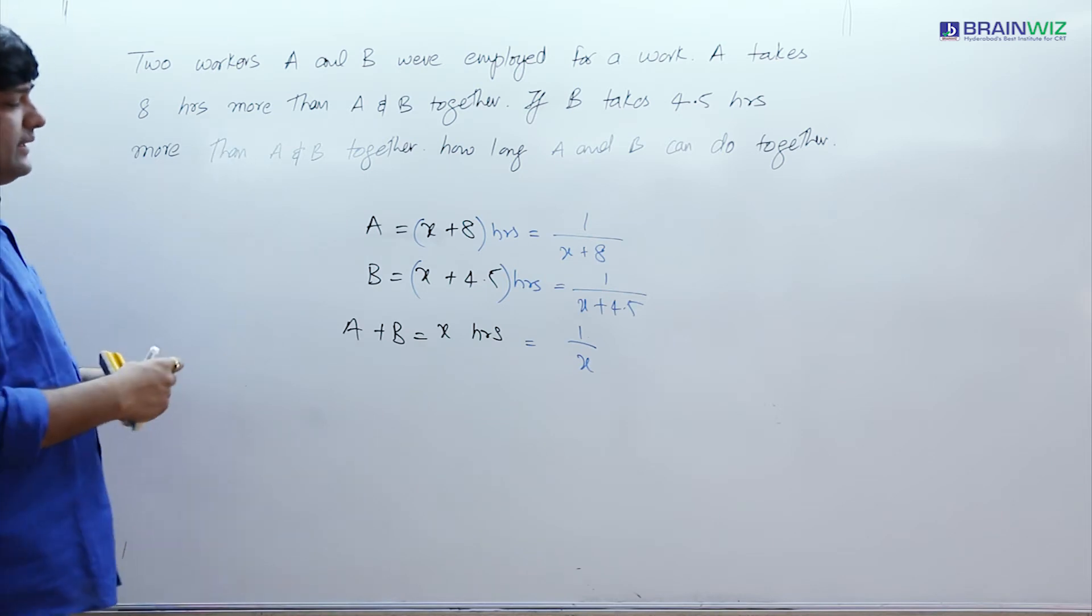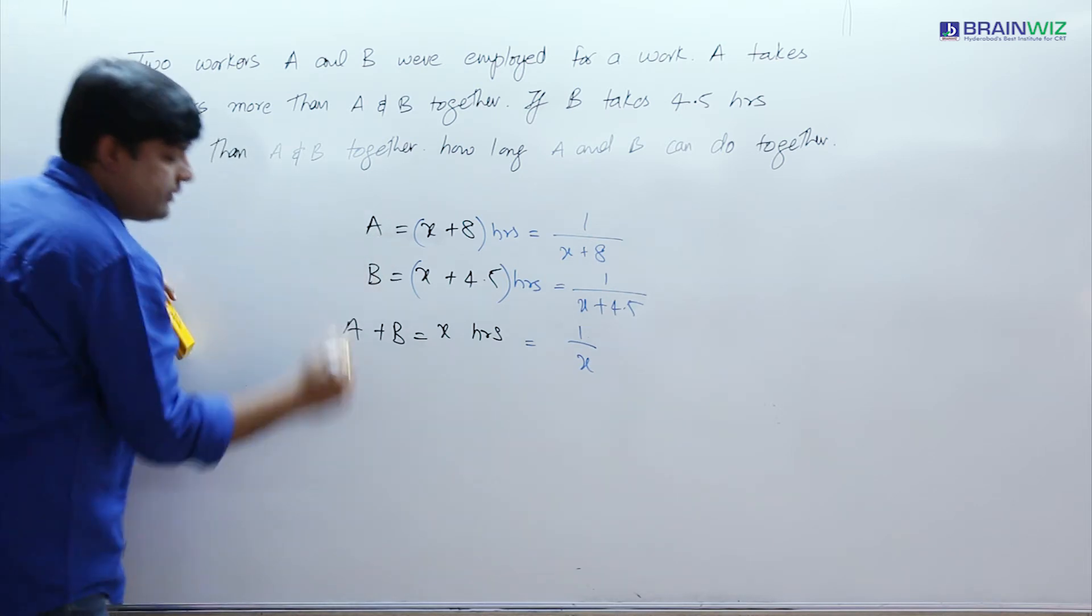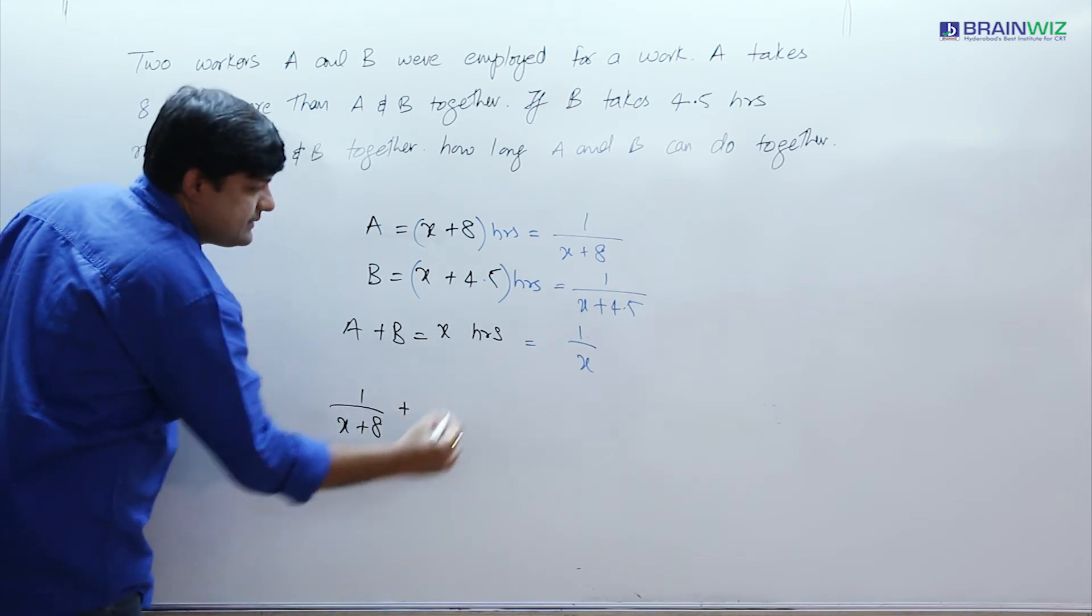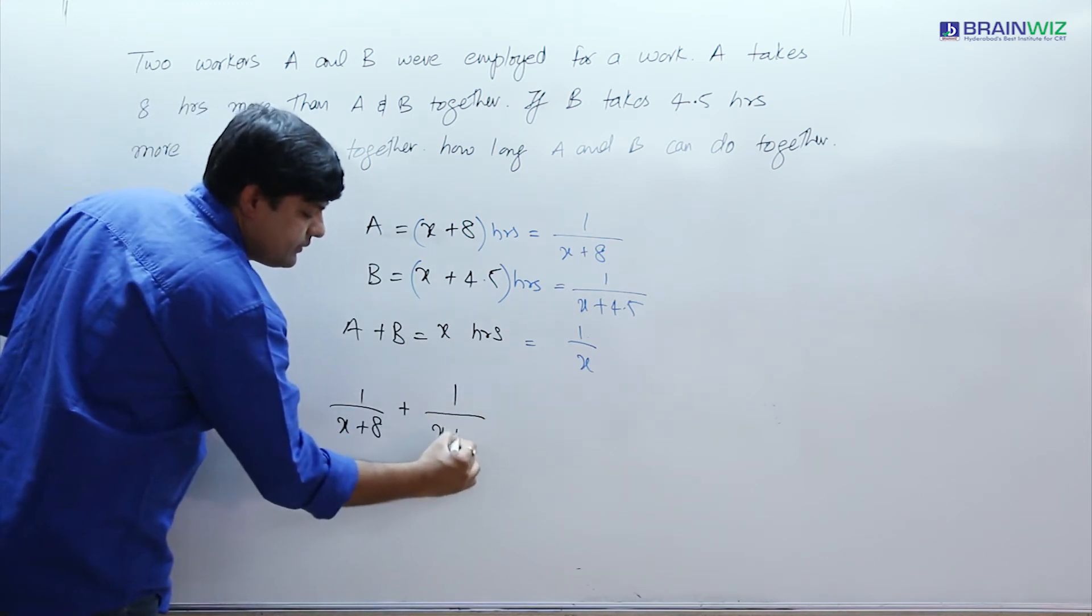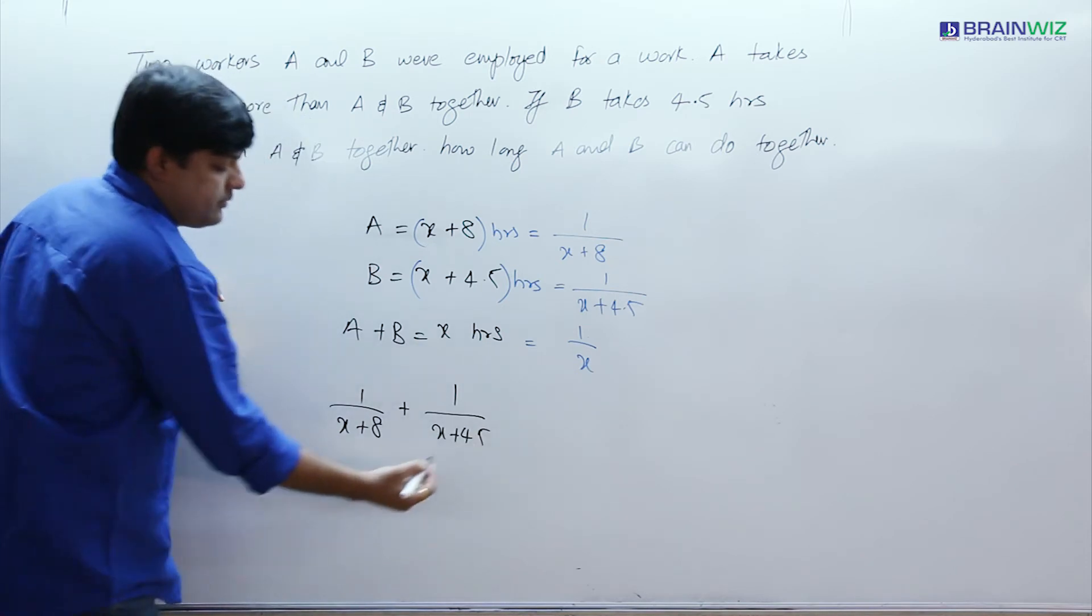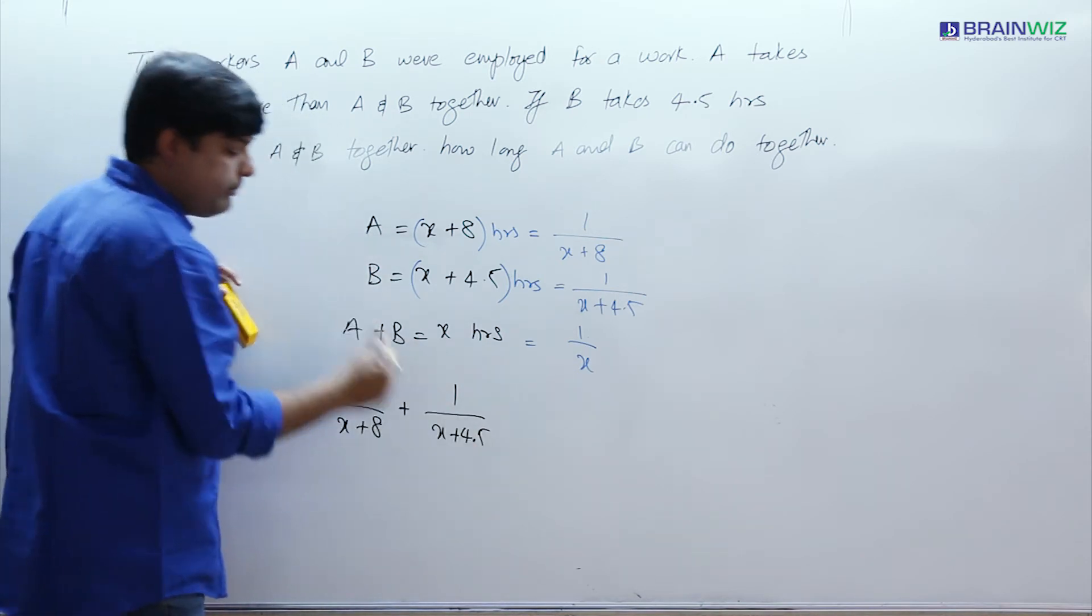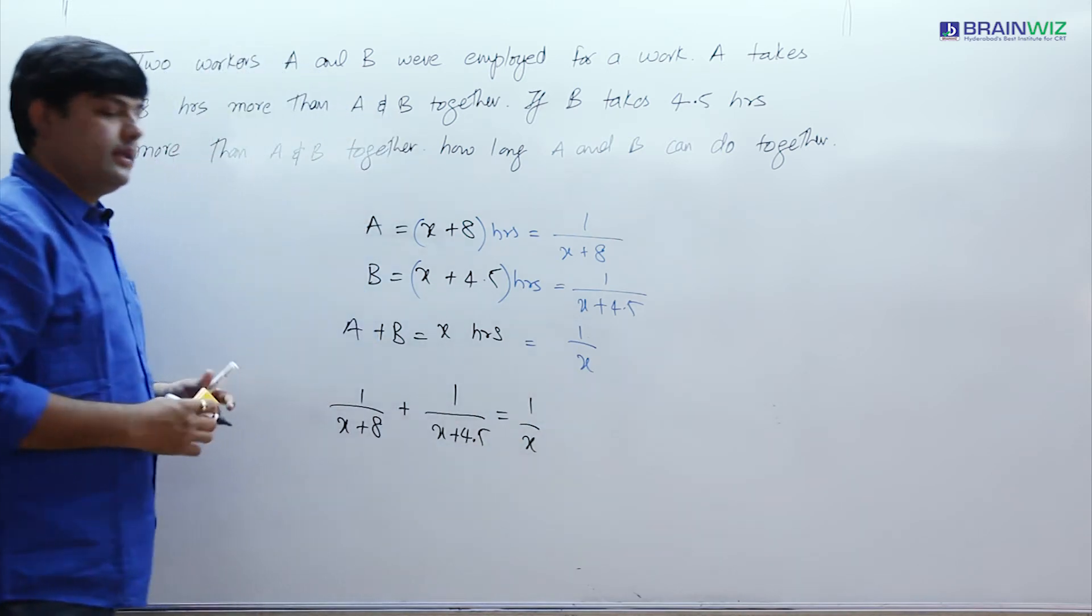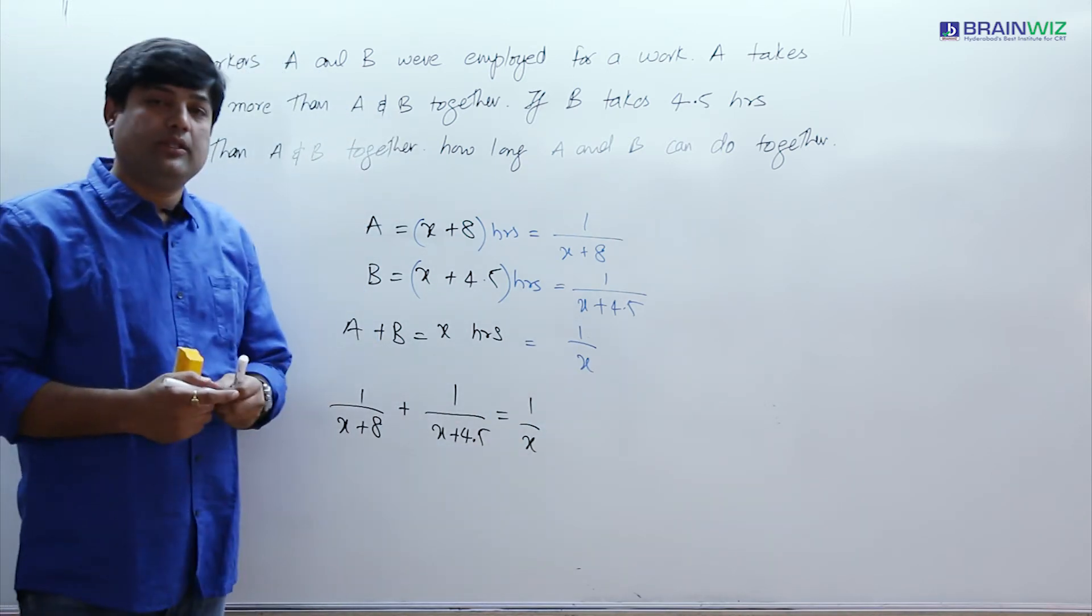So now we are supposed to see his work plus his work. These two people's work must be equal to this 1 by X. This is one of the methods which we just tried to see.